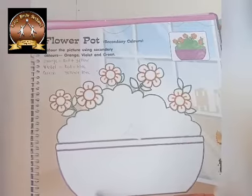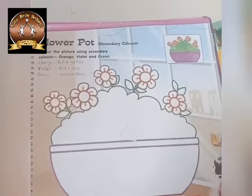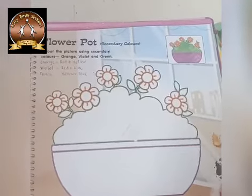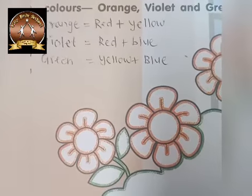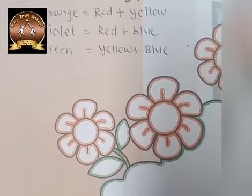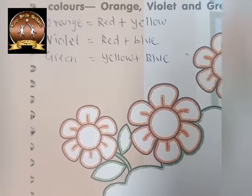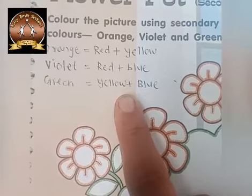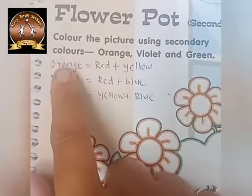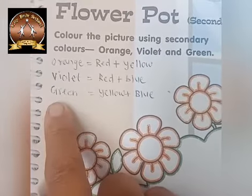But first, before that, we have to learn how we will get the secondary colors. There are three secondary colors: orange, violet, and green. To create orange color we have to mix red plus yellow. To create violet color we have to mix red plus blue. To create green color we have to mix yellow plus blue. If you don't have the original orange, violet, or green color, you can mix these primary colors to create them.